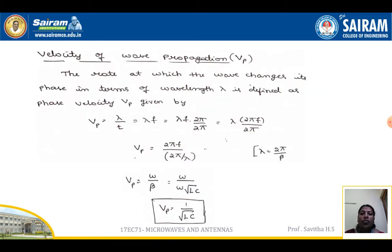Similarly, the velocity of wave propagation, denoted vp, is defined as the rate at which the wave changes its phase in terms of wavelength lambda — this is the phase velocity vp. So vp is equal to lambda divided by T, and since 1/T can be represented by frequency, I will multiply numerator and denominator by 2π.